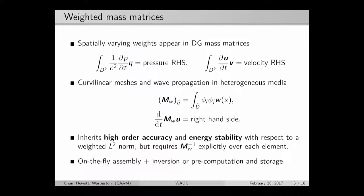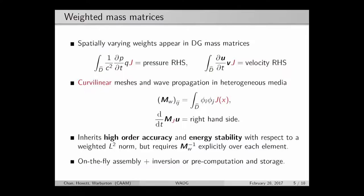If we map to a reference element, most of the time we compute our mass matrices this way. If these wave speeds and this geometric weighting are constant over the element, we can pull them out and easily invert this matrix just once for every single element in the mesh.